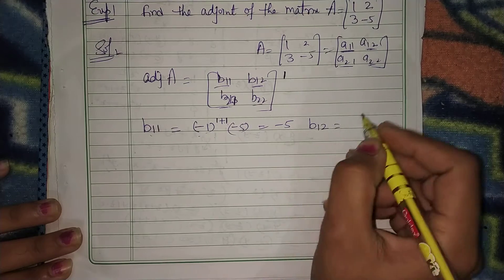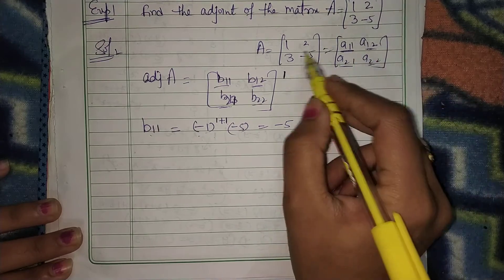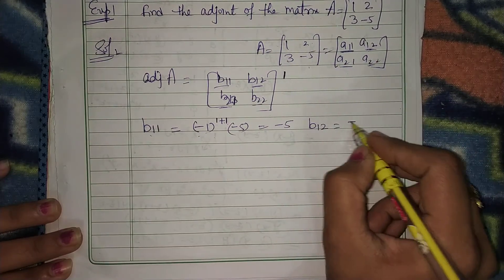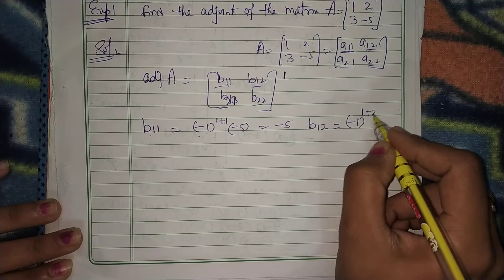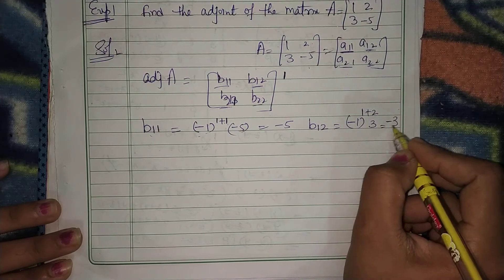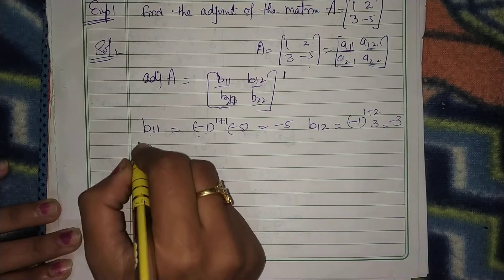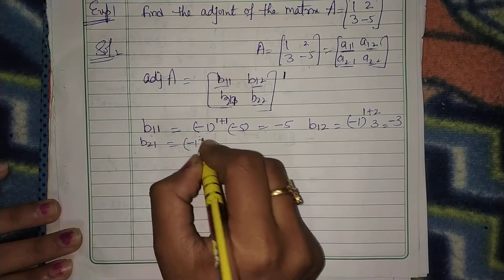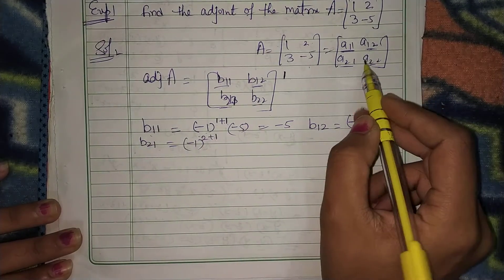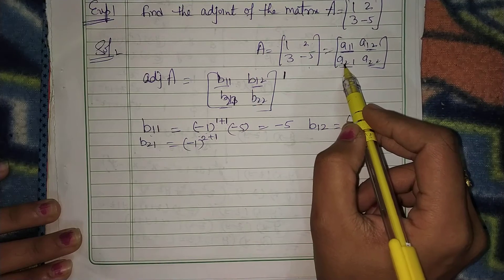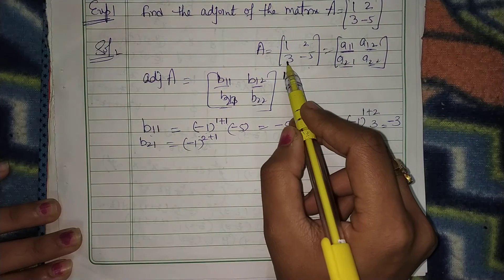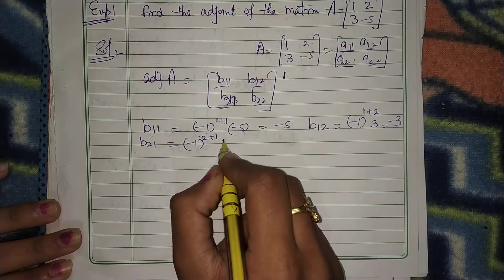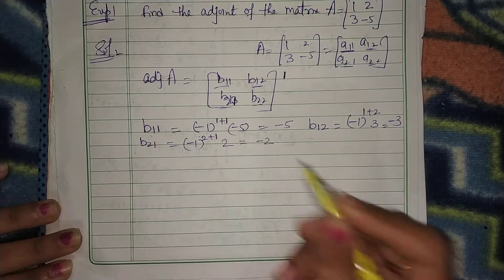What is B12? Cofactor of A12. That is (-1)^(1+2) times 3, which is -3. What is B21? It is (-1)^(2+1) times the minor of A21. The element remaining is 2, so it is -2.